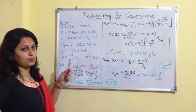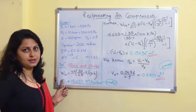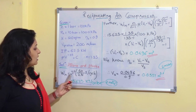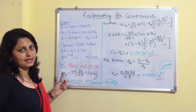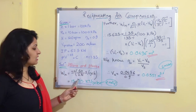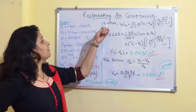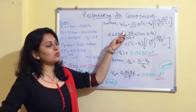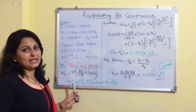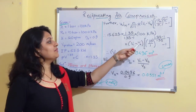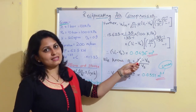Let us find bore and stroke length. Initially we find the indicated work input per cycle using the formula: IP × 60 / (2N). We get indicated work input = 15.265 kJ/cycle. Substituting this into the polytropic work formula, we directly obtain (V1 − V4) = 0.0496 m³.